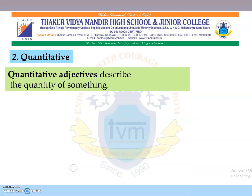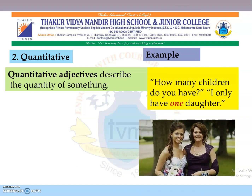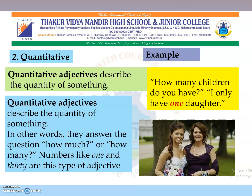Quantitative adjectives describe the quantity of something. In other words, they answer the question how much or how many. Numbers like 1 and 30 are this type of adjective.